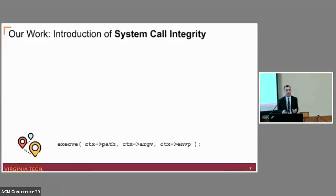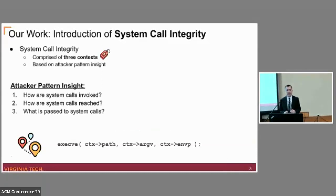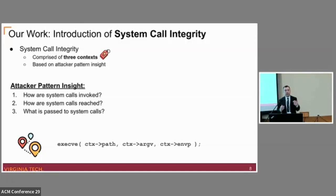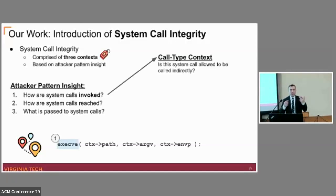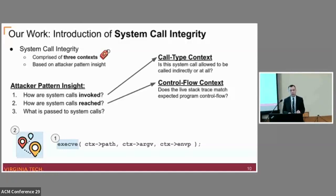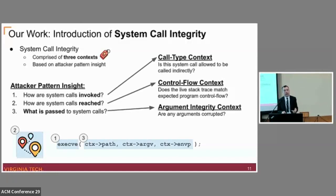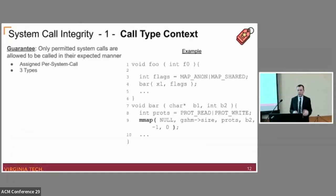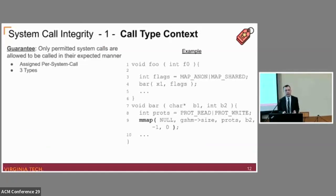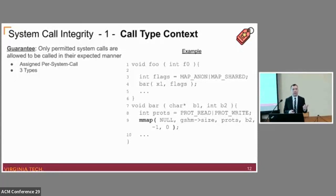That brings us to the introduction of our work: System Call Integrity. System Call Integrity is comprised of three individual contexts, which originate from our observation of how attackers abuse system calls. These contexts answer and prevent illegitimate use regarding how system calls are invoked, how system calls are reached by the attacker, and what is passed to system calls by the attacker. The first context is call type context. The guarantee here is that only permitted system calls are allowed to be called in their expected manner.